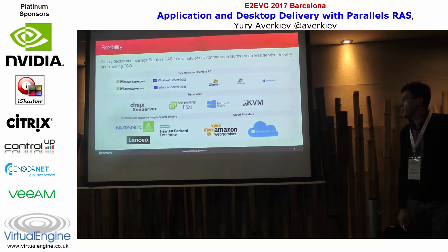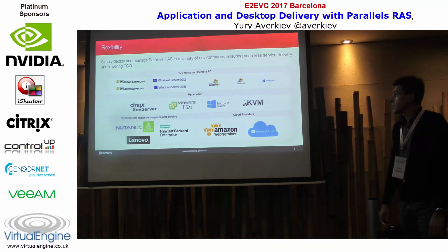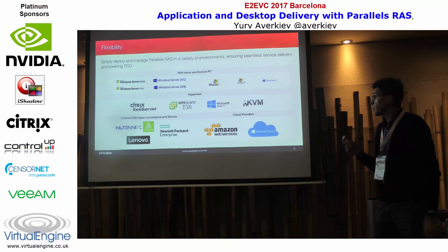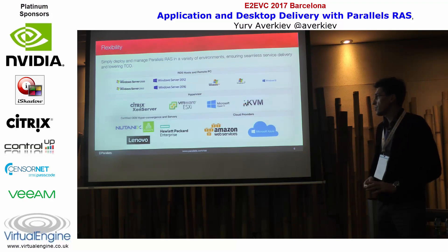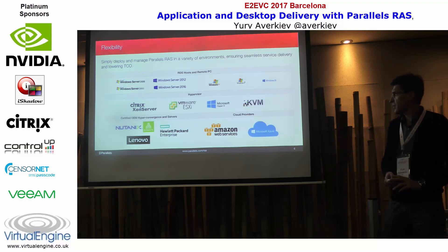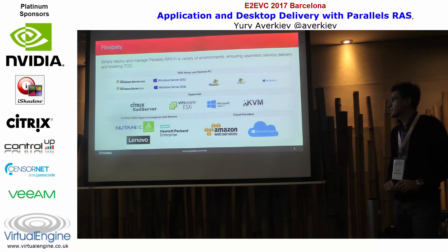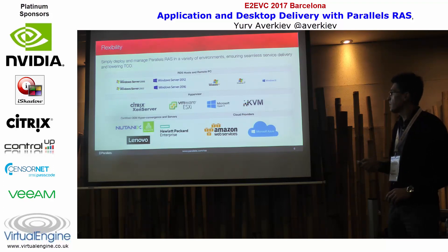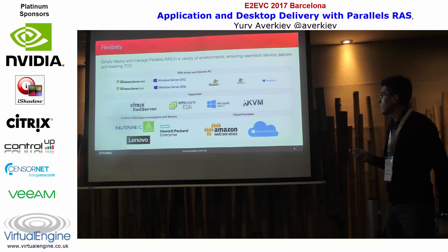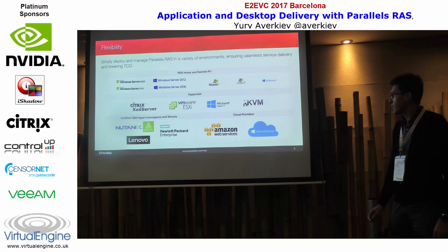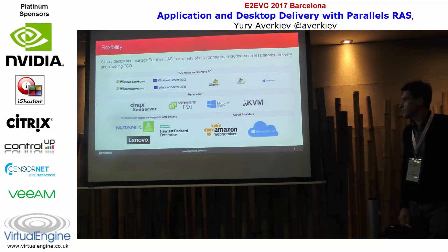In terms of flexibility, if you need to publish applications we support Windows all the way from 2016 down to 2003, which we'll probably be dropping next year, but as of today it's still supported. The same goes for remote PC publishing — Windows 10 all the way down to Windows XP, which we'll probably also be dropping next year.